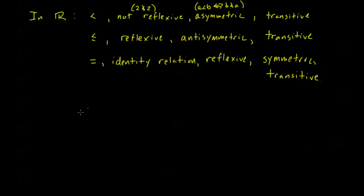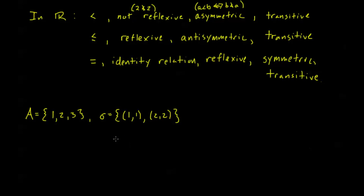Let's do a more abstract example. Let the set A equal {1, 2, 3} and define the relation sigma on A as the ordered pairs {(1,1), (2,2)}. We want to know what properties sigma satisfies. It's clearly not reflexive — for sigma to be reflexive I would also need the ordered pair (3,3) in there. For a relation to be reflexive, every element needs to be present as an ordered pair with itself.